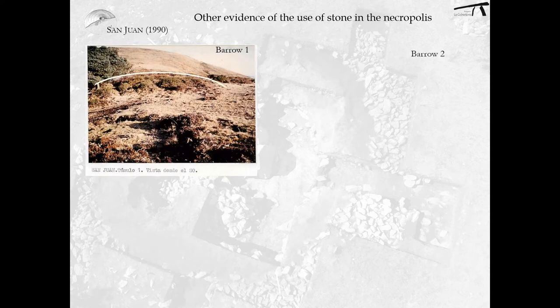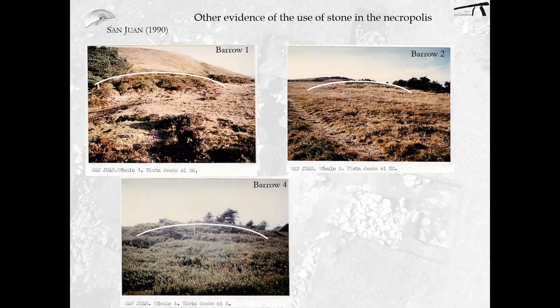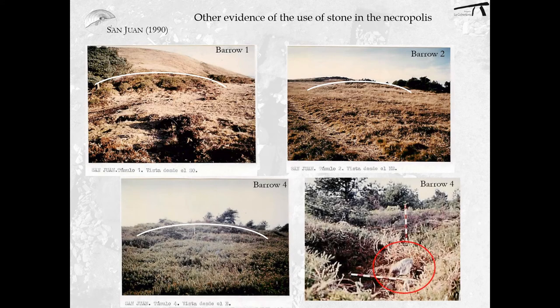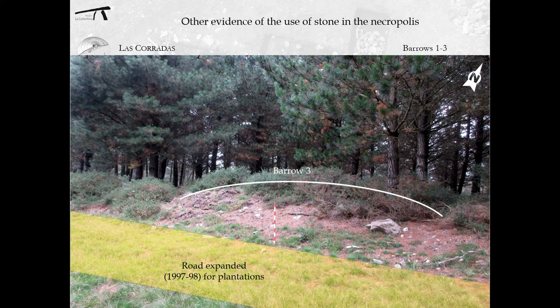What happens with the other barrows of this mountain? Information gathered from the Sites and Monument Record gives us evidence of the use of stone in the barrows. For example, in the description of the composition of barrows number one, two, and four, the text and photos included in the record clearly show the presence of this material, at least as part of the accumulation that forms the tumulus. As regards the necropolis of Las Corradas, the evidence is less obvious and more indirect, but it is still clear.